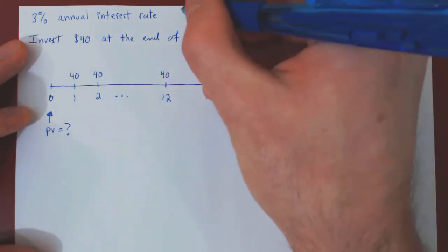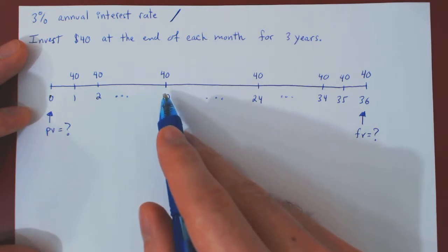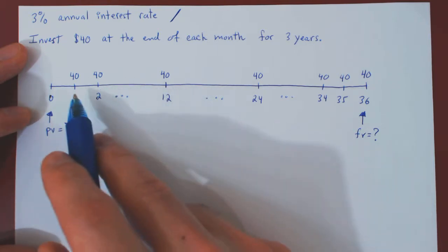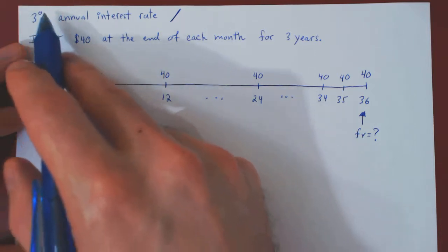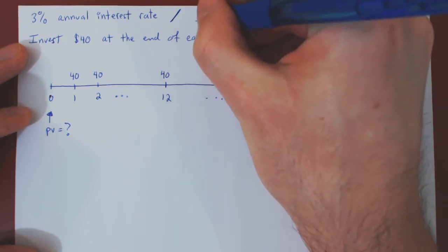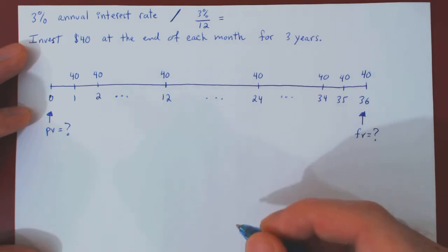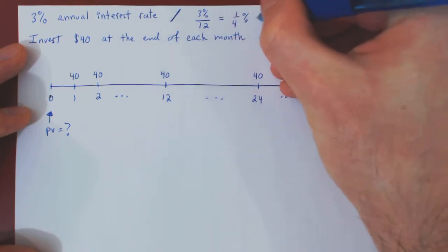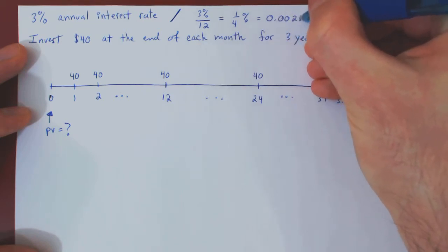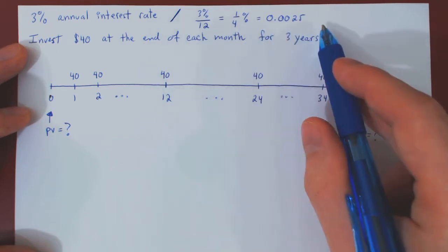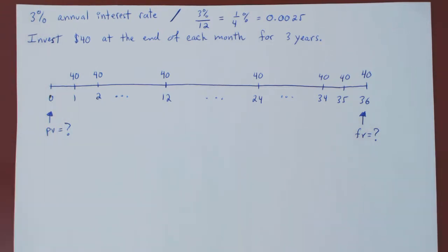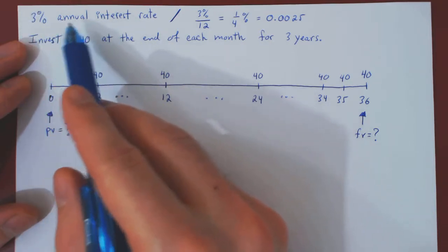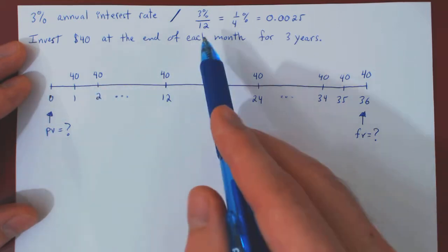If you think about it: over one year, the money will grow by 3%. Since there are 12 months per year, over a given month the money will not grow by 3%, but by 3% divided by 12 months — which gives you a quarter of a percent, quite simply 0.0025. So this is now the growth rate per a period of one month. Be very careful when the interest rate is given over a time interval different from the one at which you're making your investments.